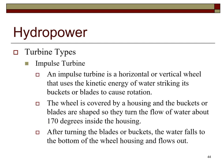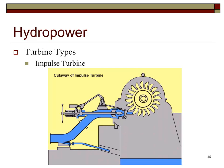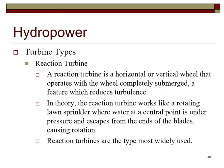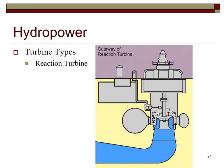An impulse turbine is a horizontal or vertical wheel that uses the kinetic energy of water striking its buckets or blades to cause rotation. The buckets or blades are shaped to turn the flow of water about 170 degrees inside the housing, after which the water falls and flows out. A reaction turbine operates with the wheel completely submerged, reducing turbulence. It works like a rotating lawn sprinkler—water under pressure at a central point escapes from the ends of the blades, causing rotation. Reaction turbines are the type most widely used.